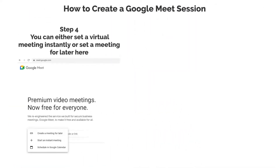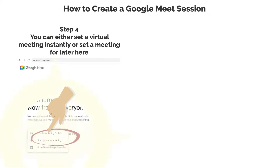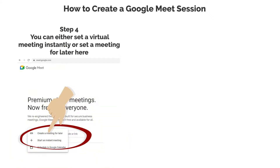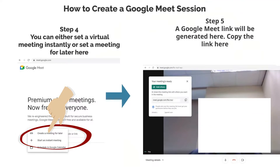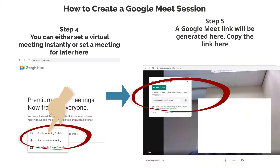Step 4. You can either set a virtual meeting instantly or set a meeting for later here. Step 5. A Google Meet link will be generated here. Copy the link here.